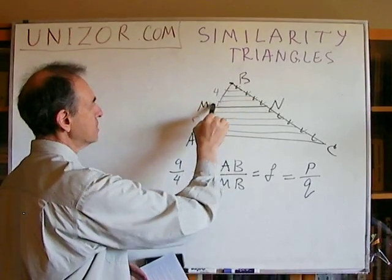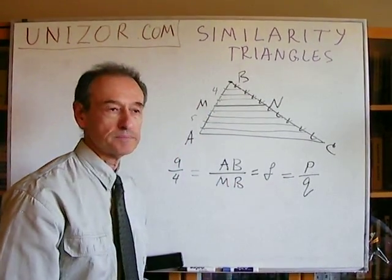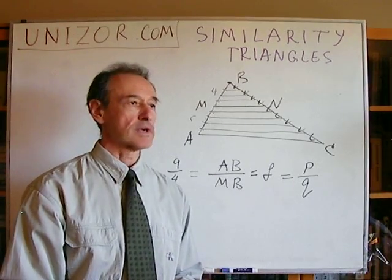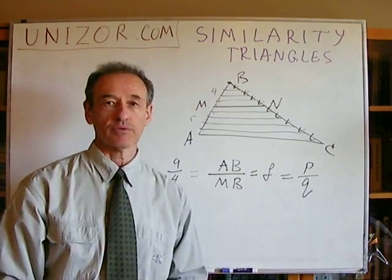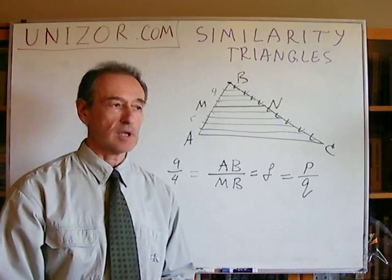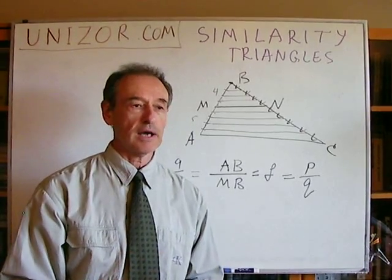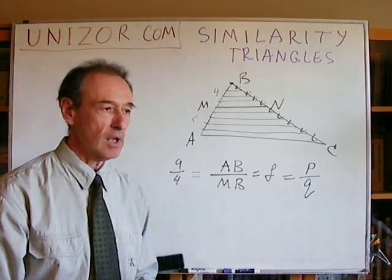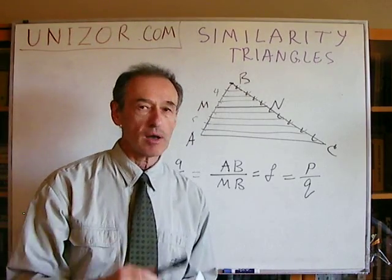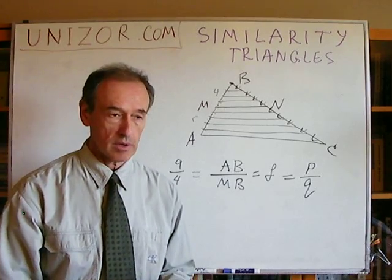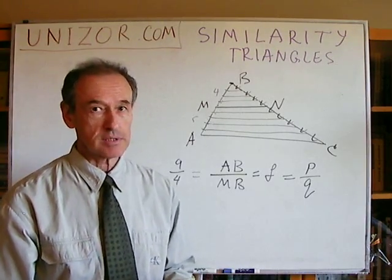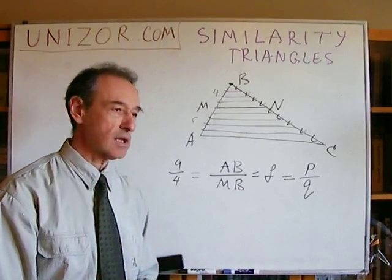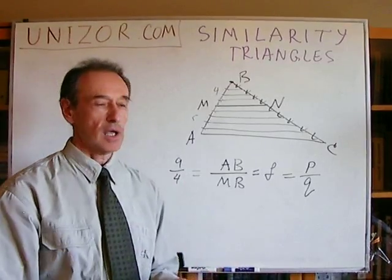I have proved this only in the case where BM to AB is a rational number. As in the previous lecture, I'm not going to oversimplify by saying it's obviously true for any real number — it's not obvious, because irrational numbers are not easy to define and it takes significant effort to rigorously prove it for them. However, since any irrational number can be approximated to any degree of precision with rational numbers, the theorem can be proven for irrationals too, so let's take it for granted.